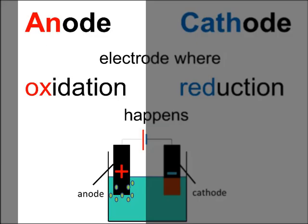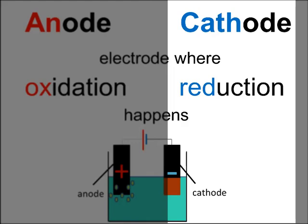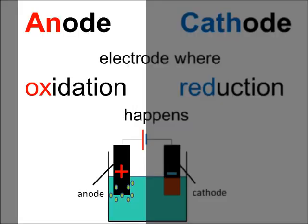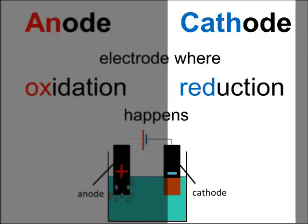An anode is the electrode where oxidation happens and a cathode where reduction happens. We can remember that anode begins with a vowel, just as oxidation does. And cathode begins with a consonant just as reduction does.